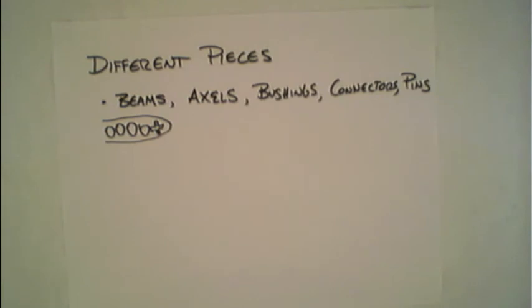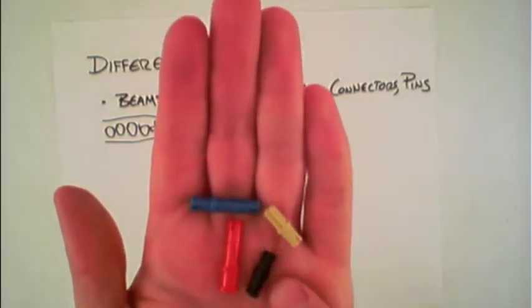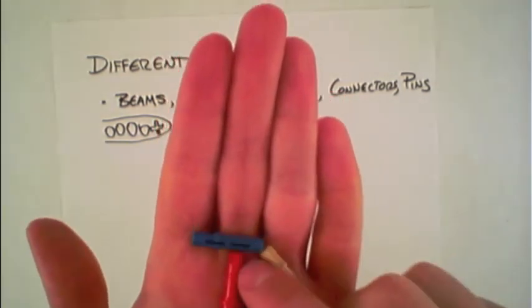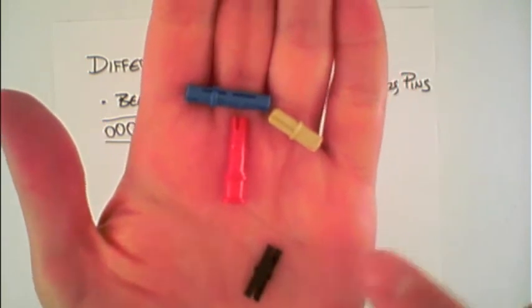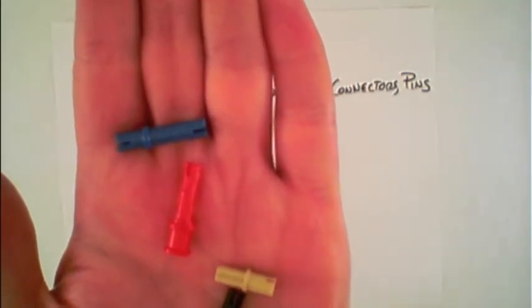Finally, we're talking about pins. There's a whole variety of different types of pins in the set. If we look at these black ones here, these are very traditional for connecting beams together. This one here has the traditional pin on one side but an axle on the other.